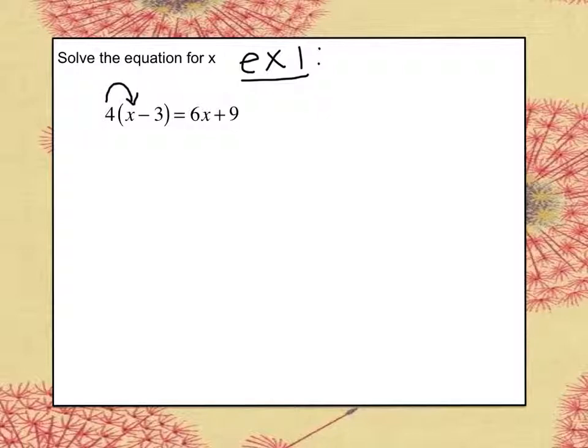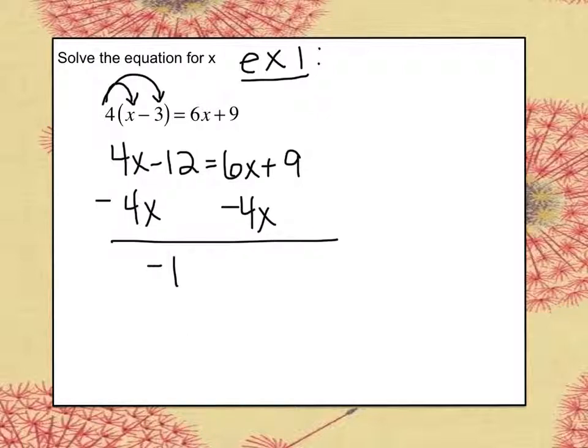Remember, distributive property needs to happen first because there's parentheses. We get 4x minus 12 equals 6x plus 9. Notice there are variables on both sides, so I'll need to get variables to one side first. I'll subtract 4x from both sides, and negative 12 equals 2x plus 9.